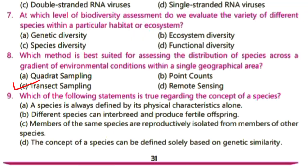Question number 9: which of the following statements is true regarding the concept of a species? Option A — a species is always defined by its physical characteristics alone — is not true, because different species can look similar, so we can't define a species solely on physical appearance. Option B — different species can interbreed and produce fertile offspring — is incorrect because if different species do interbreed, the offspring are infertile. For example, a horse and donkey can interbreed, but their offspring, the mule, is infertile.